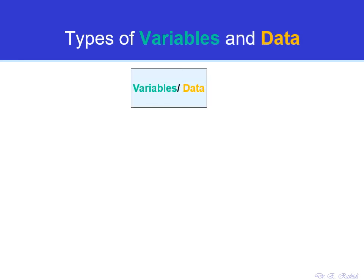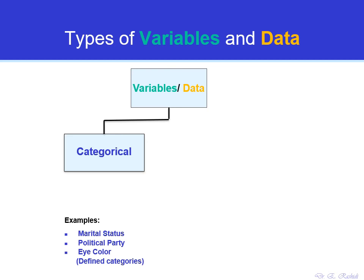In statistics, we have different types of variables and data. Some are categorical — such as marital status, where one can be single or married; political party, such as Republican or Democrat; eye color. These are defined categories that cannot be represented by numbers. Other examples of categorical variables include a student's major: economics, management, finance, marketing, MIS, or any other major. These are categories that cannot be represented by numbers. We also have another type of variable that can be represented by numbers, called numerical variables or data.